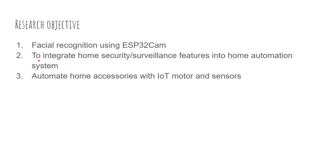The second objective is to integrate the home security system and surveillance system into the home automation system, enabling a single application to monitor and control both systems. The third objective is to automate home accessories with IoT motors and sensors, transforming traditional home products into smart products.